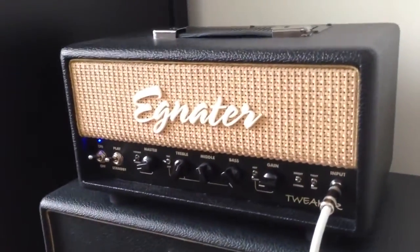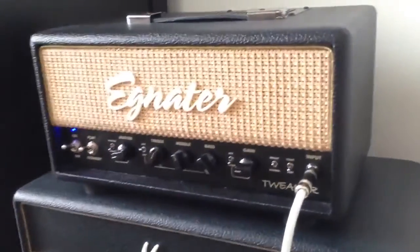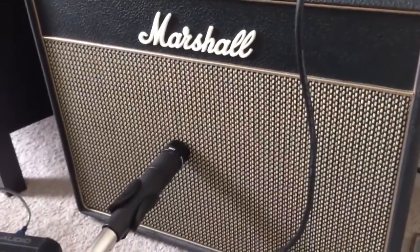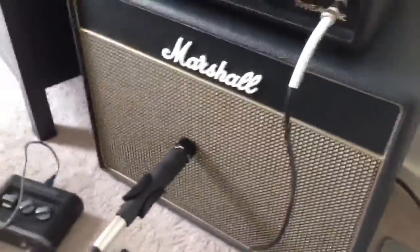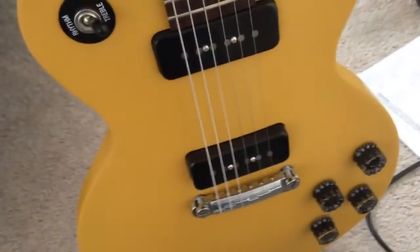So for equipment, I'm playing through an Egnater Tweaker 15 head set to Fender voicings, so it's a clean. There's not a lot of gain from the amp. Marshall Class 5 10-inch cab, SM57 mic, and the guitar of choice for the day is a 2014 Gibson Melody Maker with P90 pickups. So let me get set up and we'll jump into this.